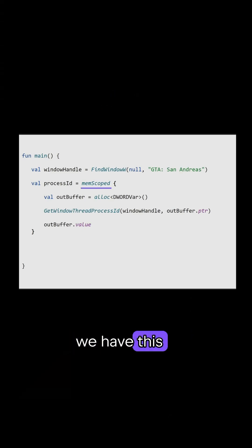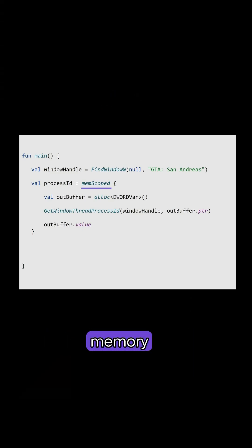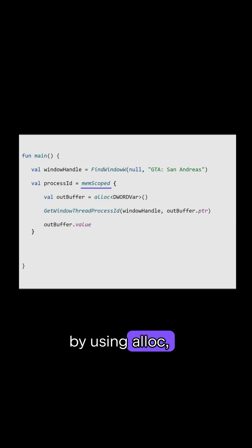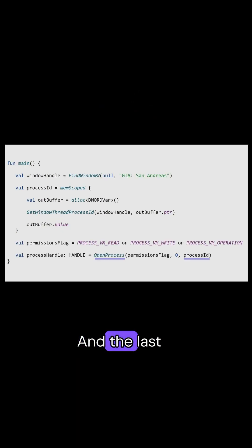You may have noticed that we have this memScoped block, and it's basically used for automatic memory management. Usually when you allocate memory manually by using alloc, you have to clean up memory manually. But memScoped takes care of it.